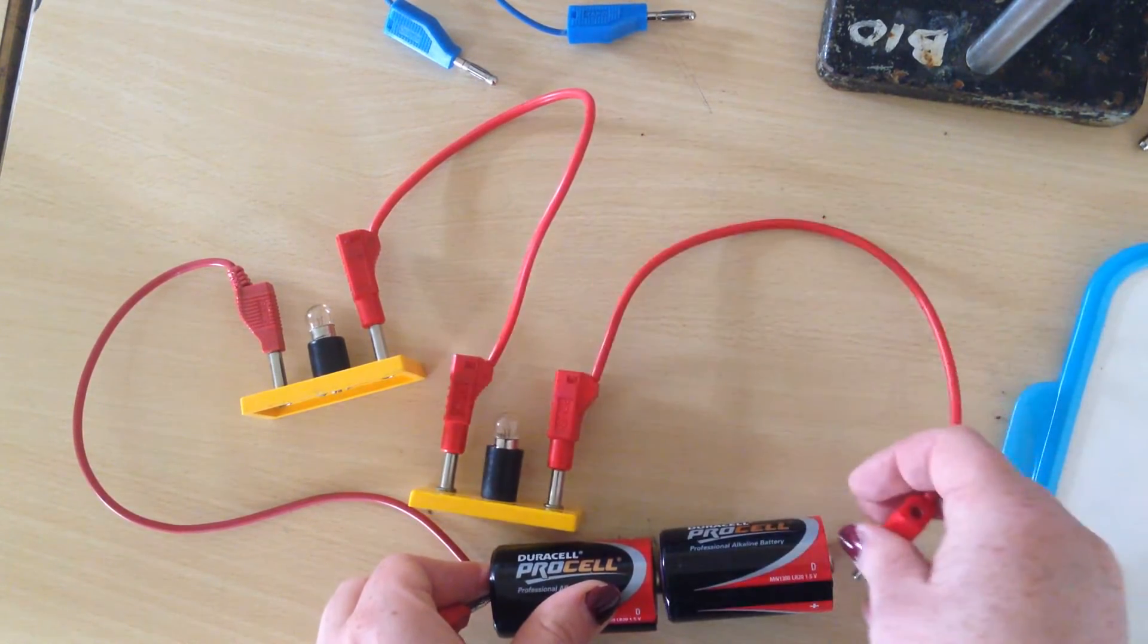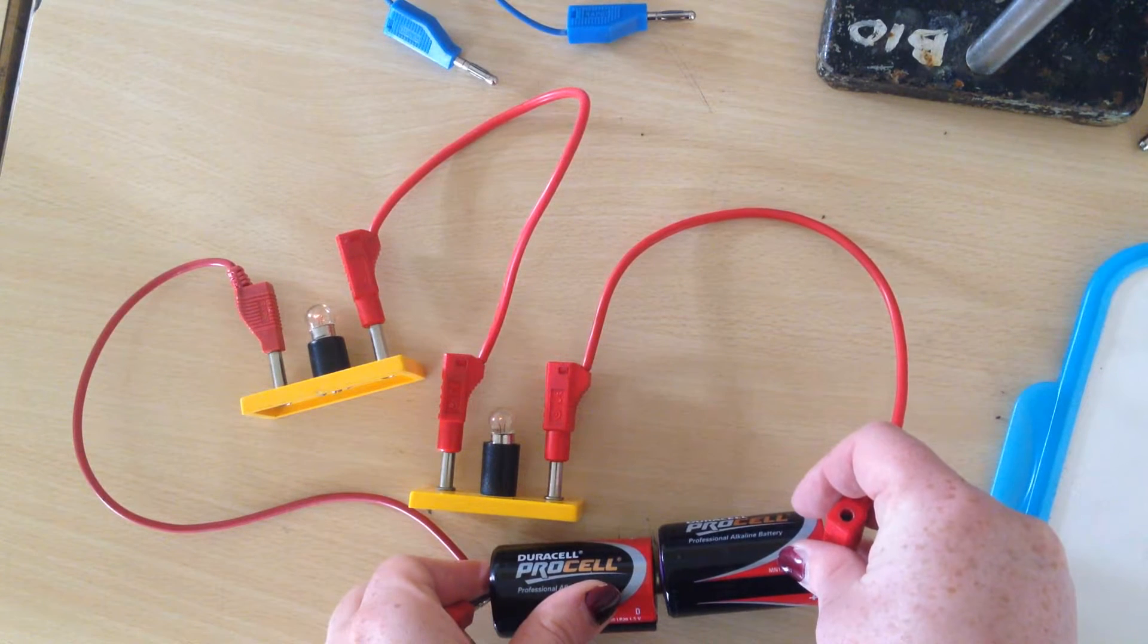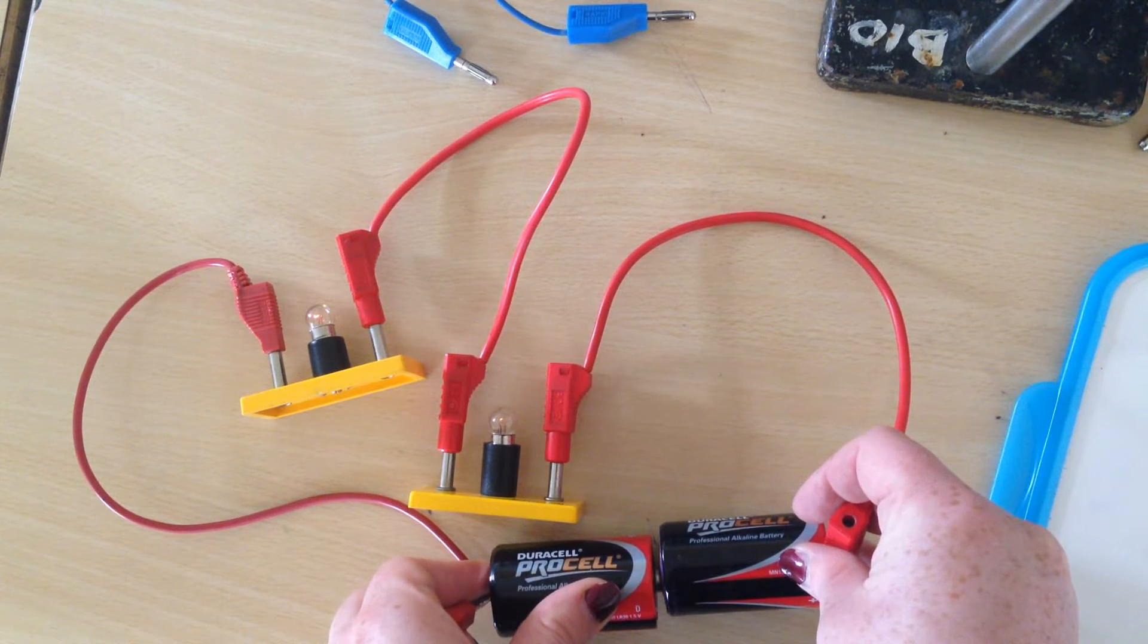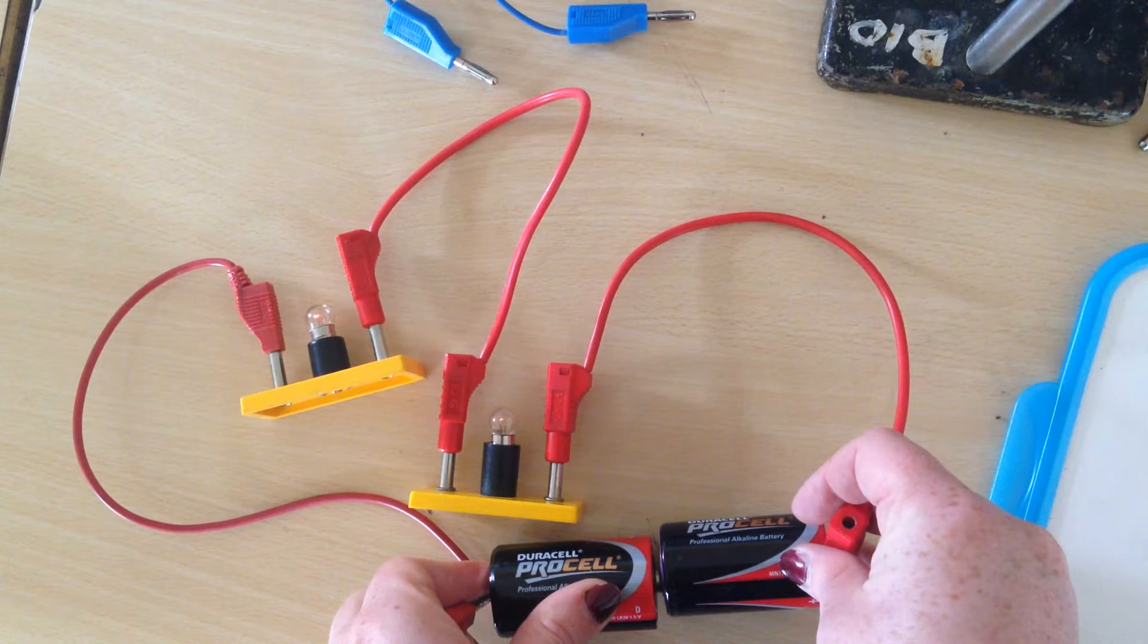Another way that I can make it brighter is just by putting another battery in there, another battery in there sorry. And you can see these bulbs are starting to light up now.